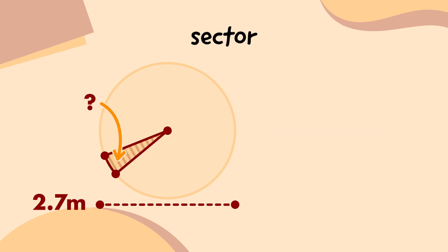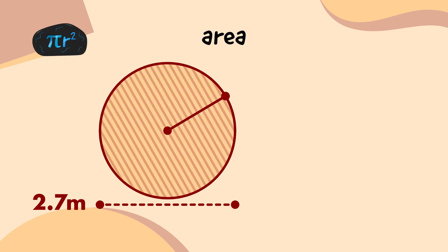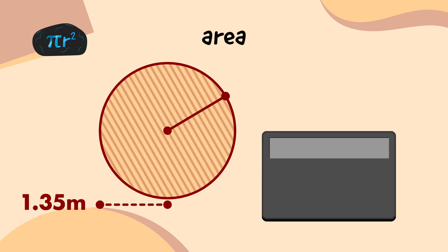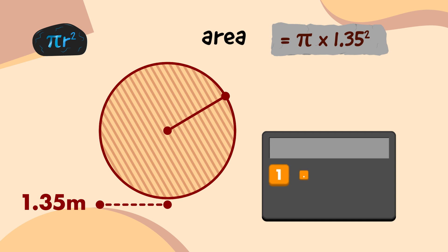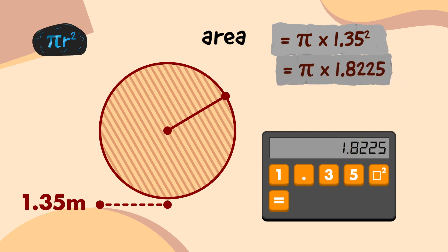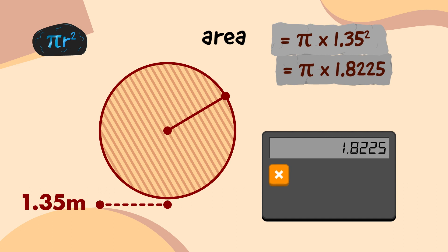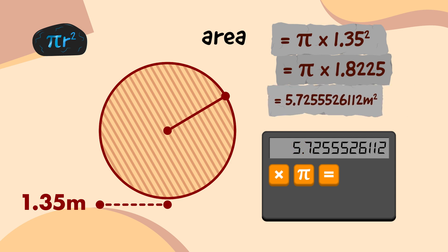Next, I'll work out the area of the sector that the vines cover. To do that, I first need to work out the area of the whole emblem, which is πr². If the diameter is 2.7 metres, and the radius is always half as long as the diameter, that means the radius is 1.35 metres. So on my calculator, I'll type 1.35, press the square button, and press the equals button, which gives me 1.8225. Then, I'm going to multiply 1.8225 by π, which tells me that the area of the first emblem circle is 5.7255526112 square metres.